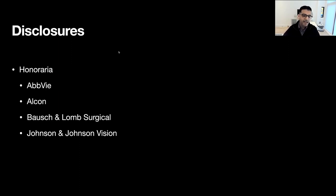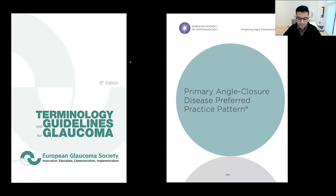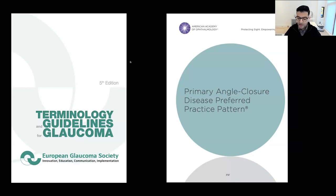Much of what I'm going to discuss today comes from two very important guidelines. The terminology and guidelines for glaucoma published by the European Glaucoma Society have been recently updated and make reference to some of the newest and most pivotal trials that really guide our practice. Secondly, the primary angle closure disease preferred practice pattern from the American Academy of Ophthalmology is a fantastic resource not only for glaucoma specialists but also for practicing optometrists, ophthalmologists, and those in training.